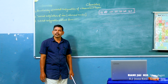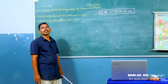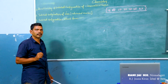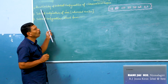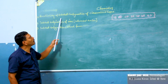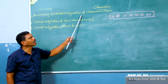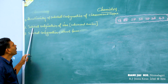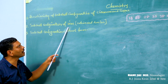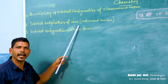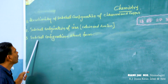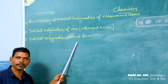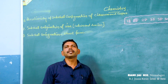Children, today we shall discuss three main matters. First, the peculiarity of subshell configuration of chromium and copper. Next, subshell electronic configuration of ions — cations and anions. And next, subshell configuration short form.